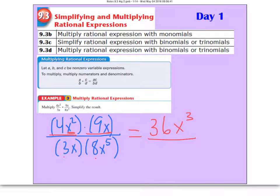On the bottom, I can do 3 times 8 is 24 and I can bring an x to the 1st and an x to the 5th together to get x to the 6th.